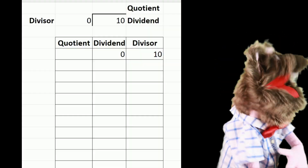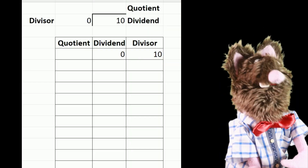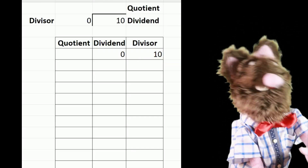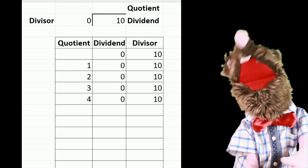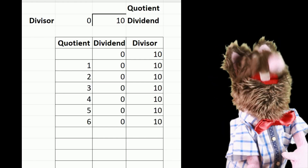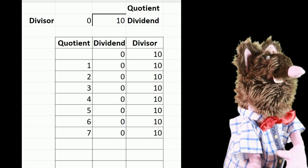What happens, though, if you put zero up there? Well, ten minus zero is ten. Every time you subtract the next value, you'll get ten. All you will ever get, forever and ever.